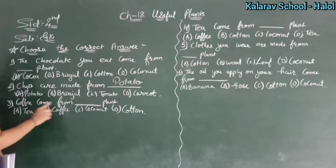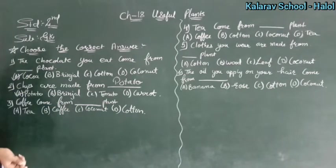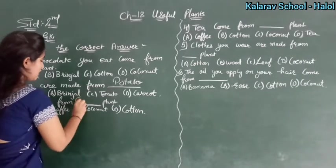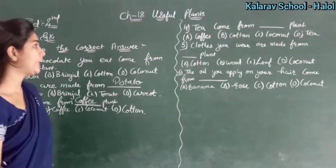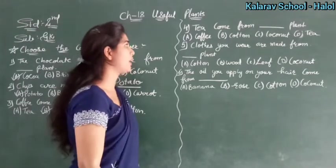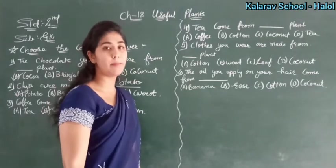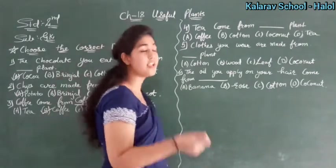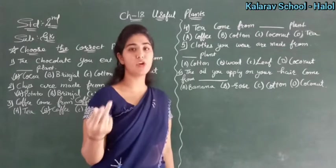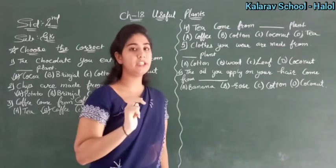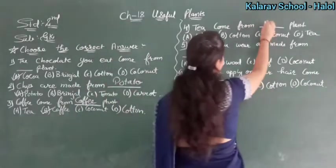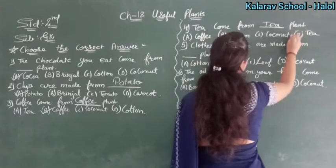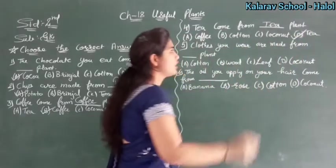Coffee comes from which plant? It comes from the coffee plant. Here you write C-O-F-F-E-E, coffee. Then, tea comes from which plant? Tea comes from the tea plant. When your mother makes tea she adds tea leaves — those tea leaves come from the tea plant. So here you write tea, and option D is correct.